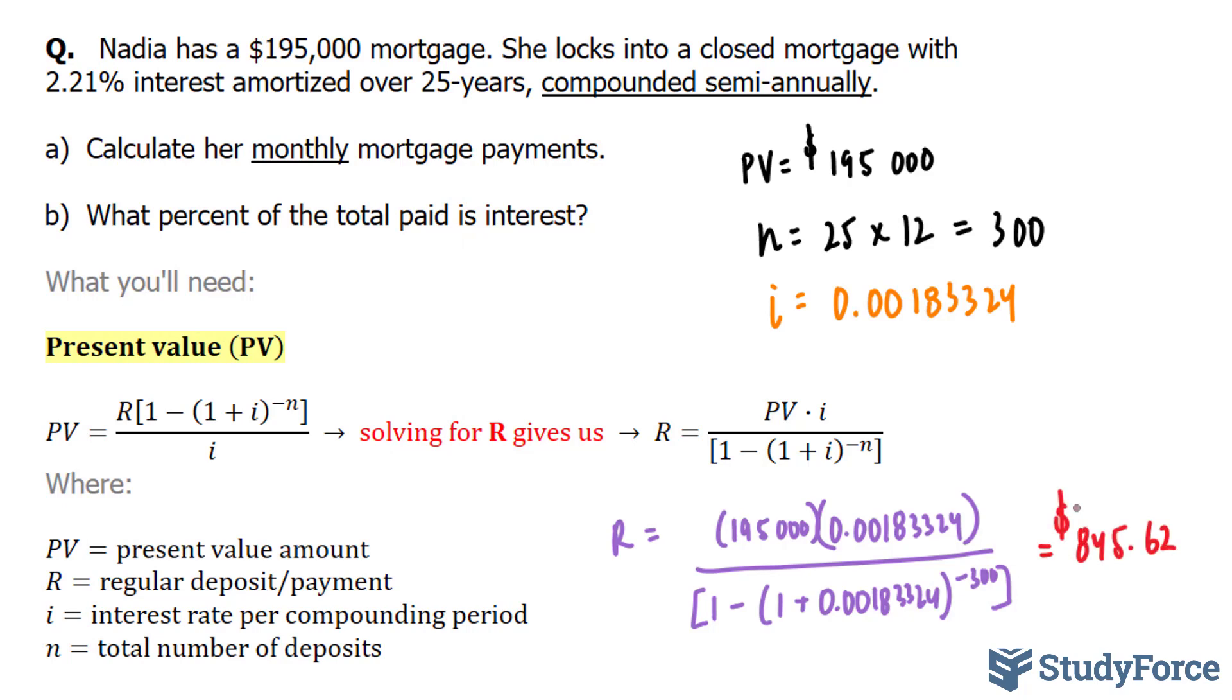So what does this mean for Nadia? Nadia has to pay $845.62 every month for the next 25 years. That answers A.